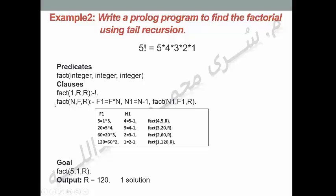يقوم البرولوج بالمطابقة مع الرول الأولى وتكون غير مطابقة، ثم مع الرول الثانية وتكون مطابقة حيث N=4, F=5. F1 = 5×4 = 20، N1 = 4-1 = 3. تعود fact(3, 20, R).